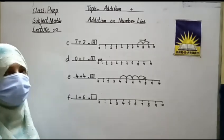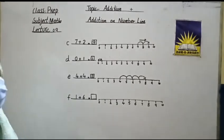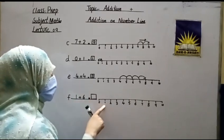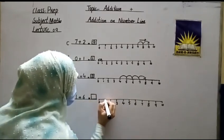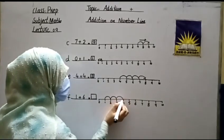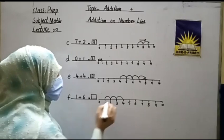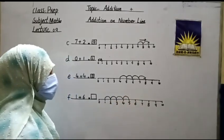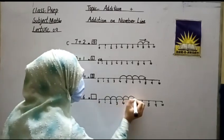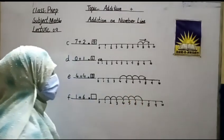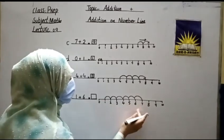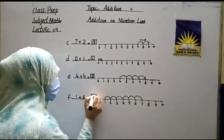This is a very easy method to learn addition using the number line. Next question is one plus six. Start at one and make six jumps: one, two, three, four, five, six. Look at the number below — it is seven. So the answer is seven.